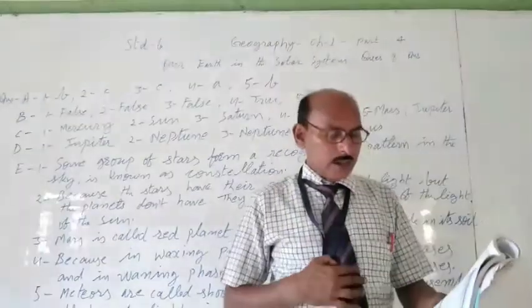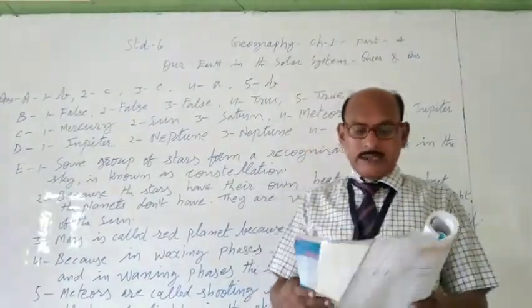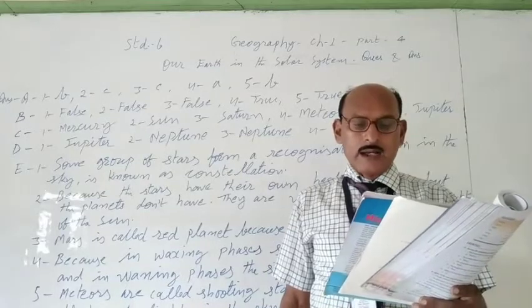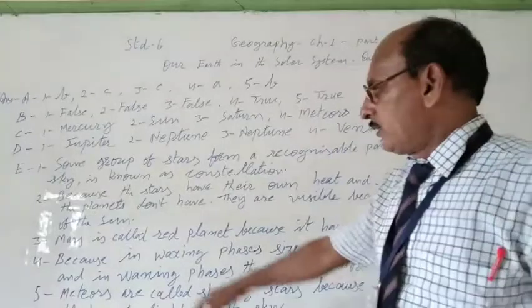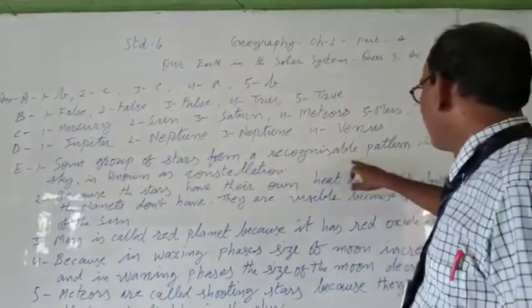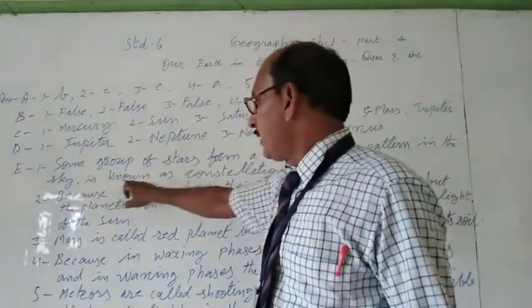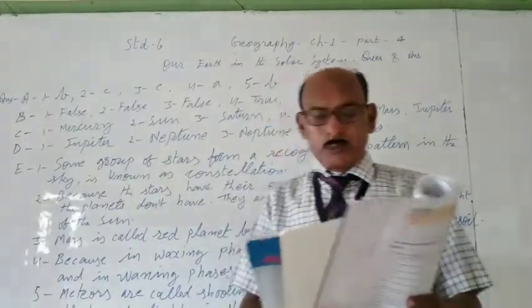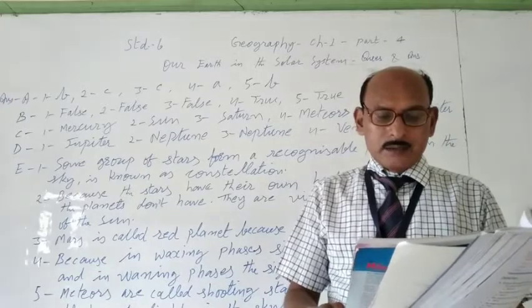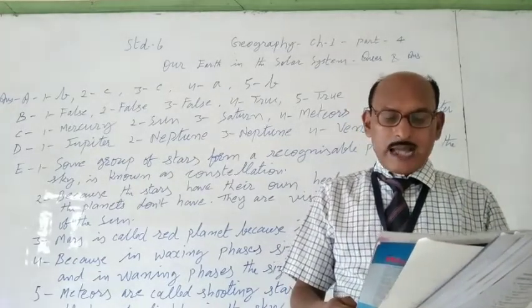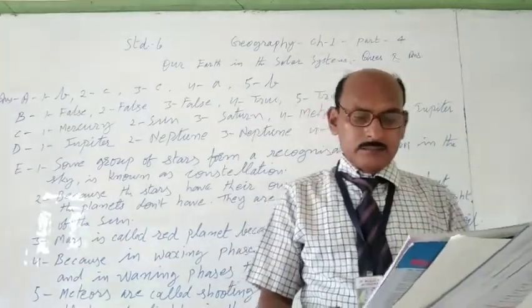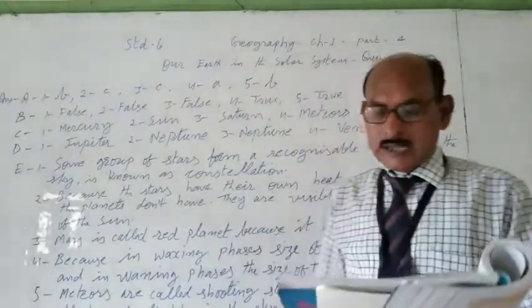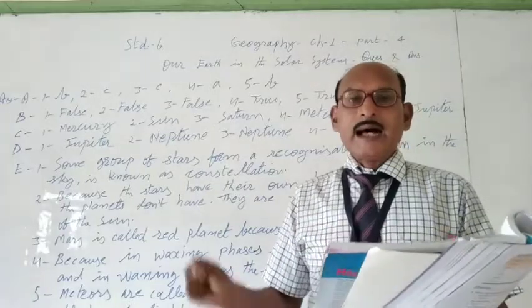Now question E, answer the questions in about 50 to 70 words. First, what is constellation? Which two groups of stars point to the polar star? So answer is, some group of stars form recognizable patterns in the sky. It is known as constellation. And the two stars that point to the polar star are Dubhe and Merak.